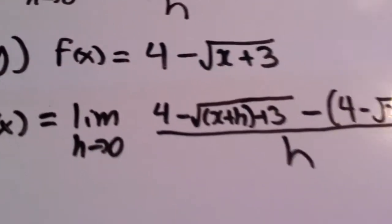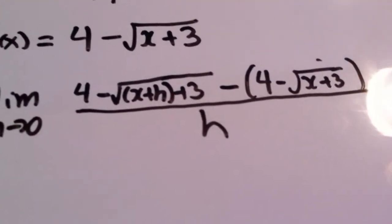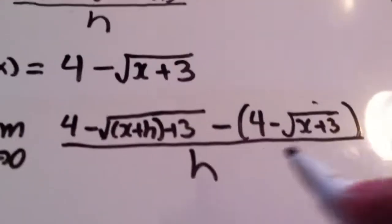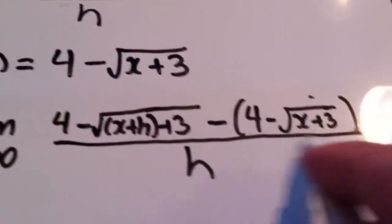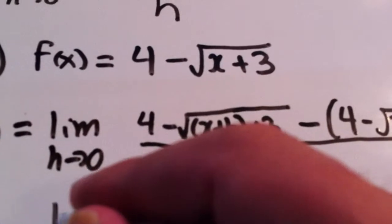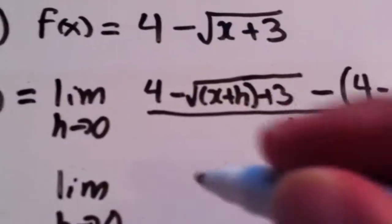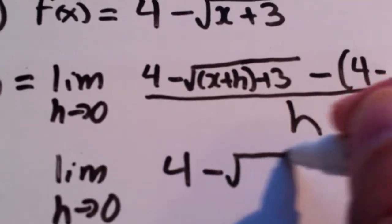So the next thing we try to do would be to simplify this expression. The first thing that we probably do is distribute the negative sign to everything behind this bracket. So if we do that, it would still be the limit as h approaches 0 of 4 - √(x+h+3)...